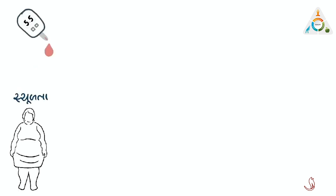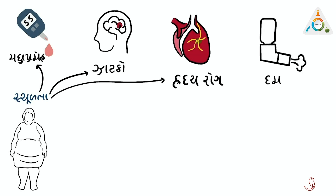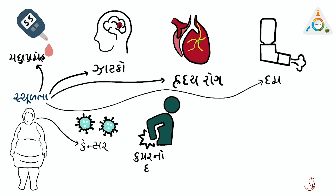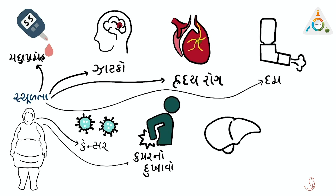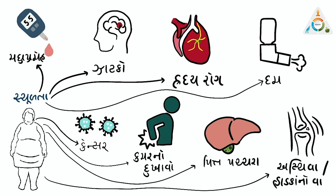So what are the problems with being overweight or obese? You are at a higher risk of developing conditions such as diabetes, stroke, heart disease, asthma, cancer, back pain, gallstones, and osteoarthritis.